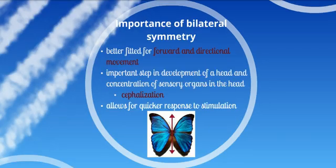Why is bilateral symmetry important? It allows for an animal to have directed movement, which can help when searching for food or escaping predators.